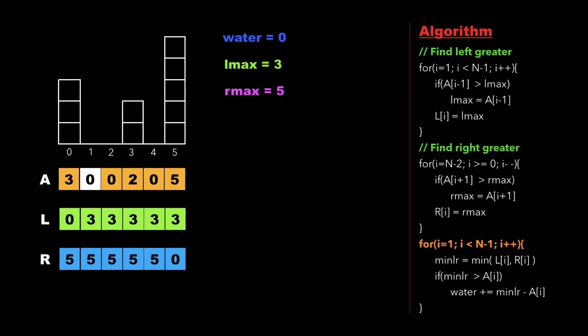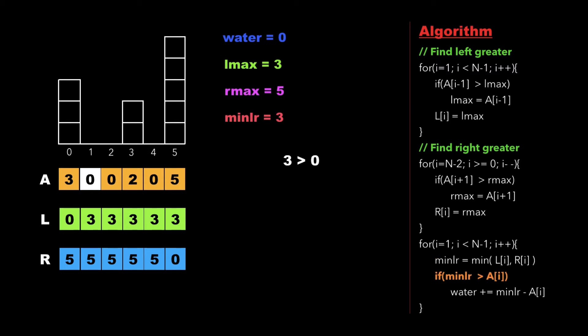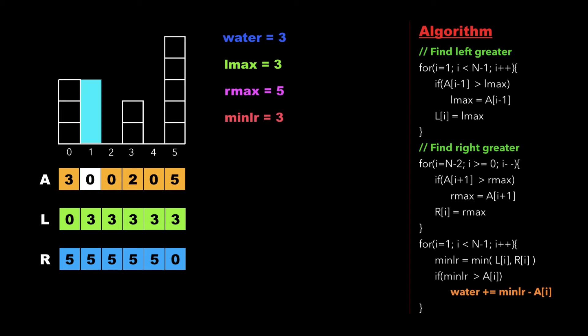We declare another variable min_lr, which is the minimum of the left greatest and right greatest values. For i = 1, the minimum of 3 and 5 is 3. We check whether min_lr is greater than a[i]. Since 3 is greater than 0, we update water as water + min_lr - a[i], giving water = 3. So we have collected 3 units of water in the block at index 1.